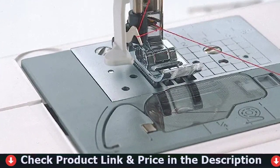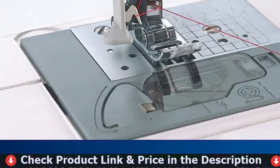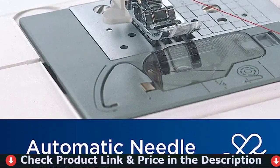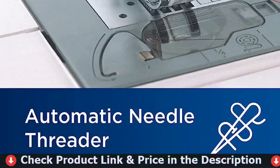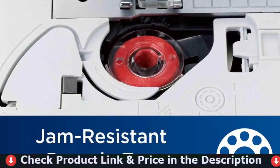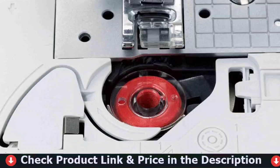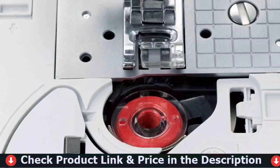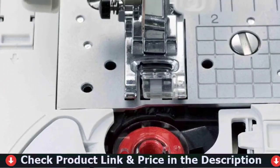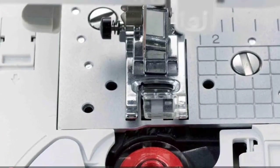The Brother XR9550 is equipped with easy-to-use features like a large LCD screen that enables computerized stitch selection, free arm capability for sewing cuffs and sleeves, and drop feed for free motion quilting and sewing. Simply choose your stitches and settings with the intuitive push-button stitch selectors, then see your stitch and stitch settings clearly displayed on the LCD display screen.